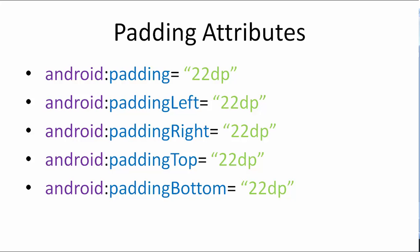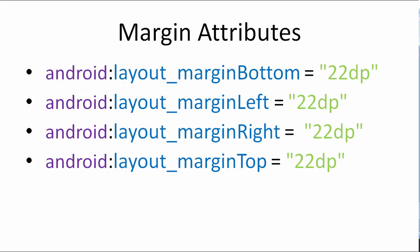Android:paddingTop pushes the content inside a view away from the top, and android:paddingBottom pushes it away from the bottom boundary. For margin attributes: android:layout_marginBottom creates space outside the view on the bottom, android:layout_marginLeft on the left side, and android:layout_marginTop creates space outside the view on the top.